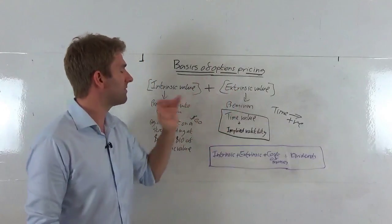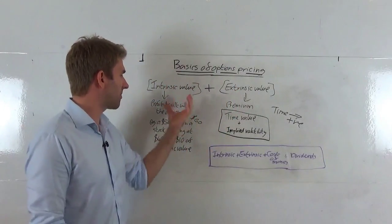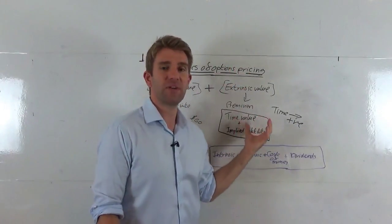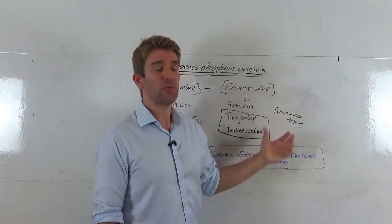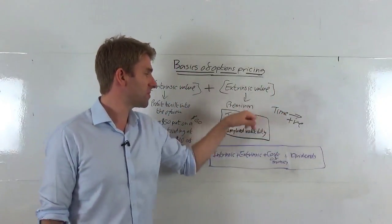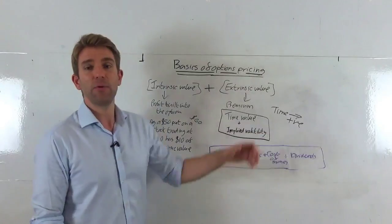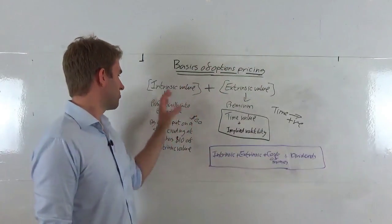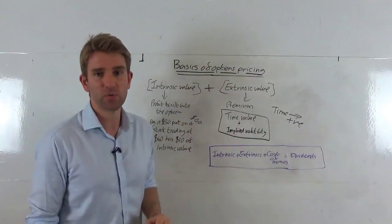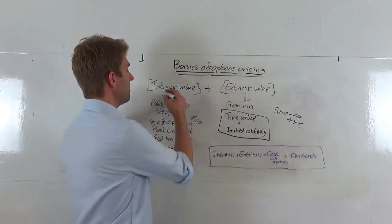Those are the two major things, guys, that make up the value of an option: the intrinsic value—the profit built into it—and the extrinsic value. If we're buying an out-of-the-money option, it's purely based on the time to expiry and the implied volatility. If we're buying an in-the-money option, we've got some profit built into the option, and we should need to add on to it.